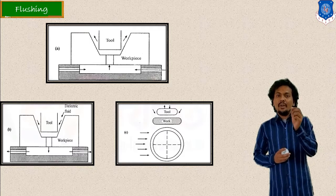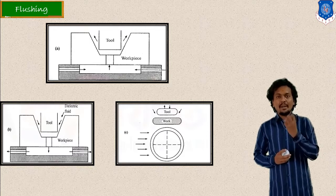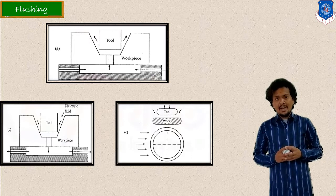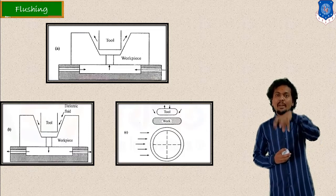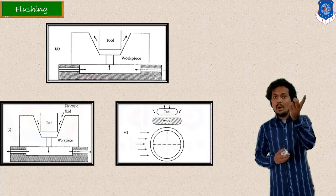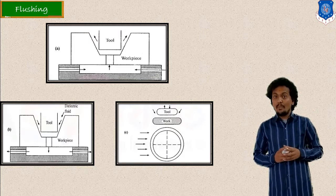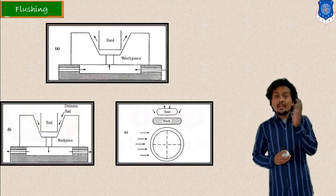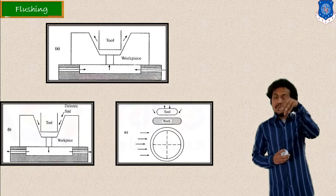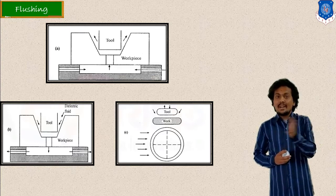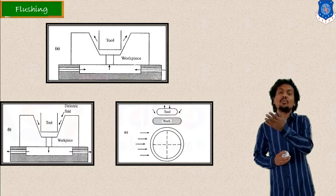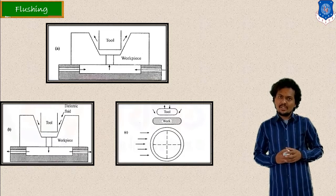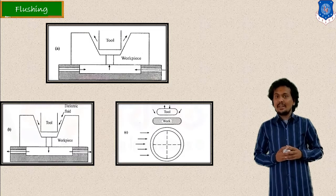A filter is required, where scrap or debris will be separated, and a pump is used for circulating the liquid. Pressure flushing, suction flushing, and side flushing are the types. In suction flushing, the dielectric medium is sucked in an upward direction. In pressure flushing, it flows from upward to downward. In side flushing, the dielectric medium is circulated from left side to right side when viewed from the top.